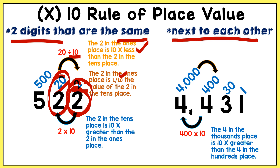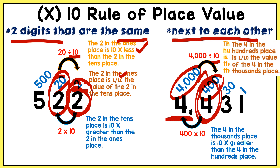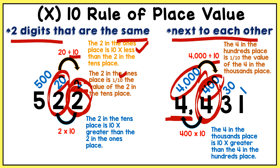Looking at 4,431 again — moving in this direction, 4,000 divided by 10 gives me 400. So I would say that the 4 in the hundreds place is 10 times less than the 4 in the thousands place. I can also say that the 4 in the hundreds place is one tenth the value of the 4 in the thousands place.